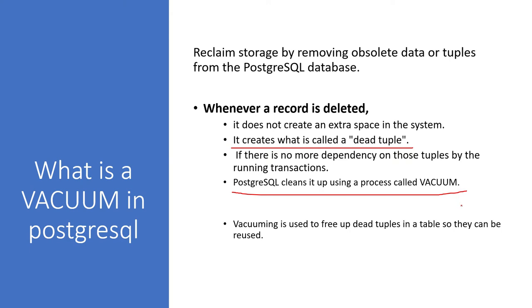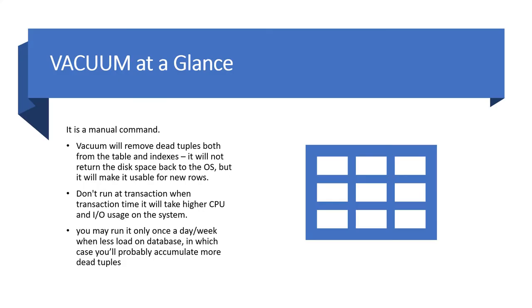So what is vacuum? Vacuum is used to free up the dead tuples in the tables so these rows can be reused later on. There may also be an option where that space can be returned back to the operating system.